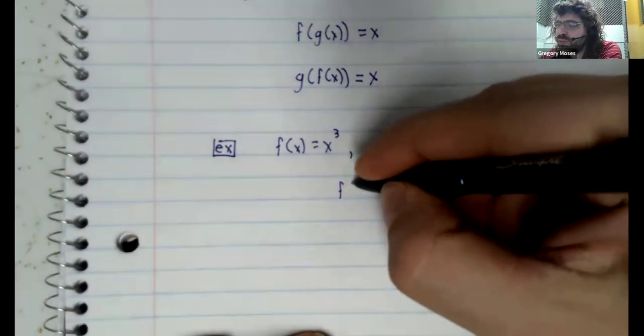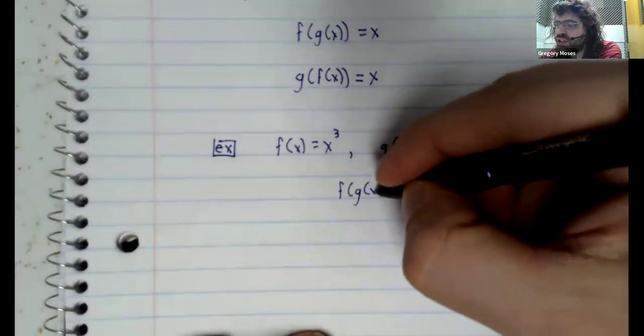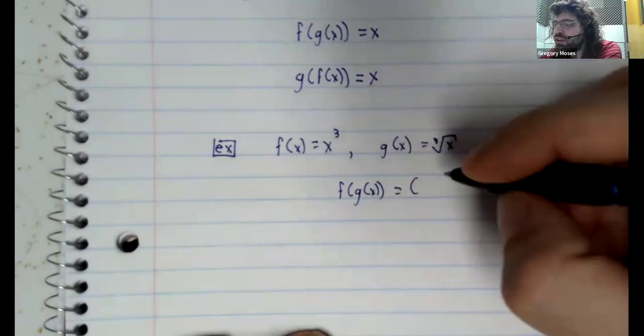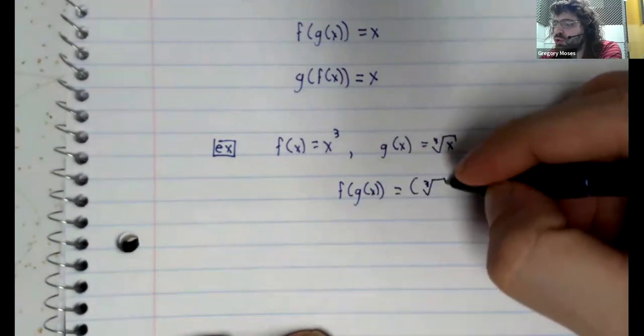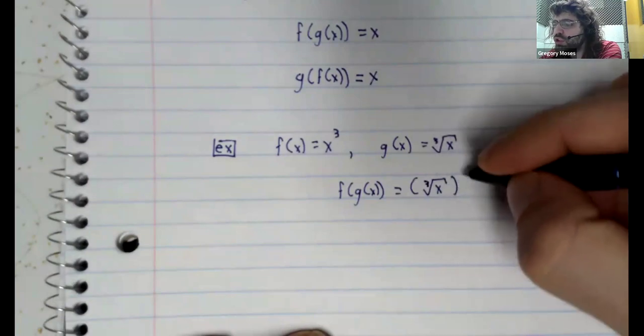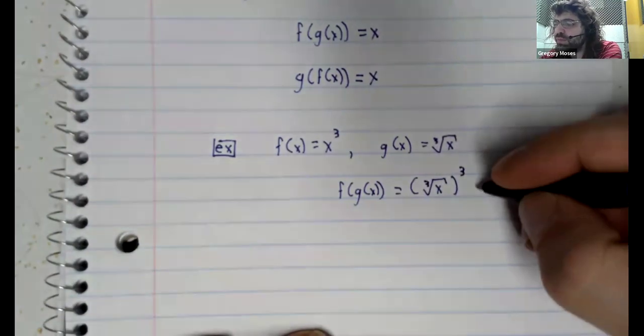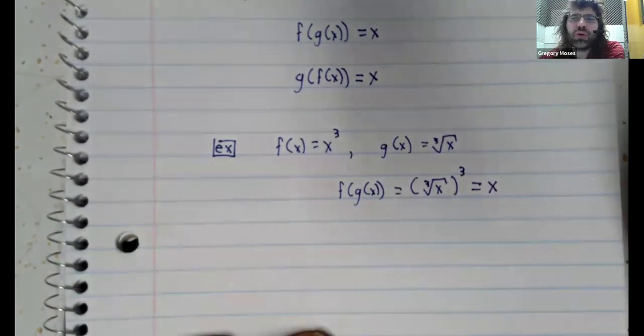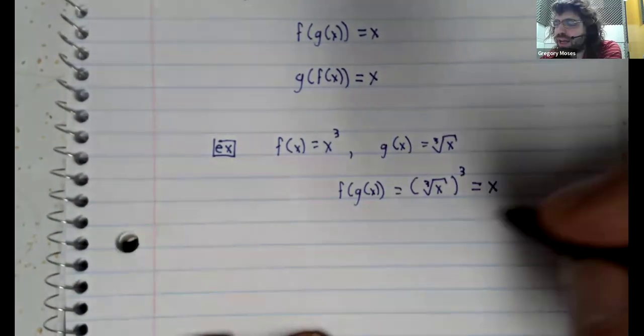If we compose these functions, f of g of x is the cubed root cubed, and the cubed root and the cube cancel, and you are just left with x.